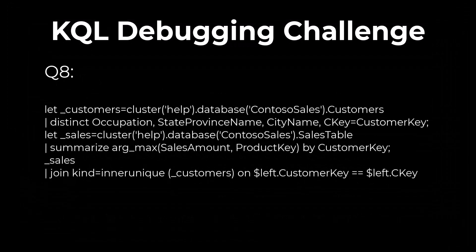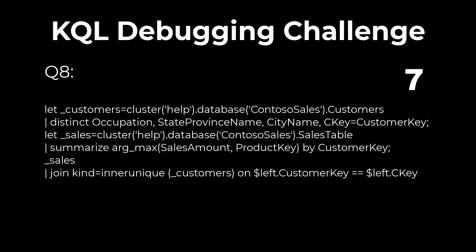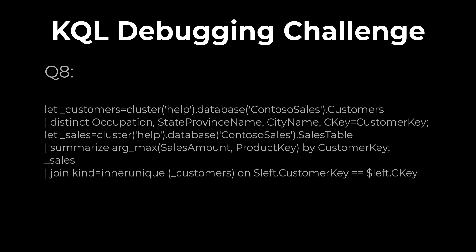Problem 8. Find the bug in this query. When you join two tables and the key field has a different name on both tables, you use $left and $right to define the fields that should be used as keys. In this example, we have two $left references, which will throw an error.